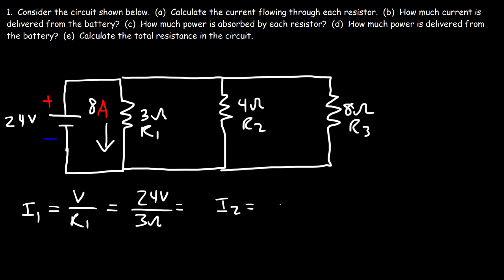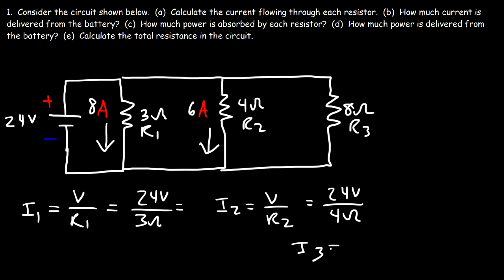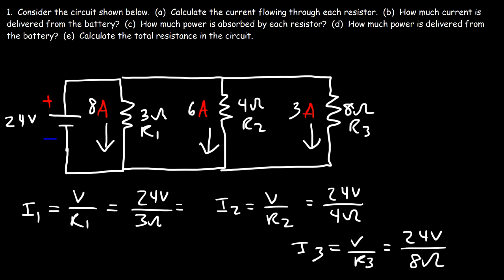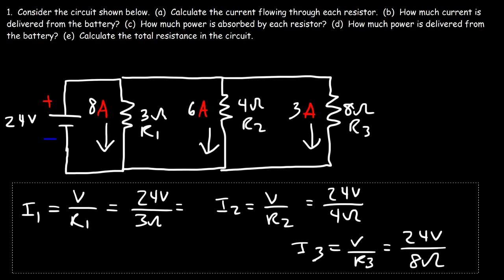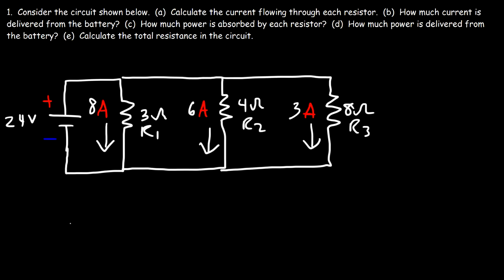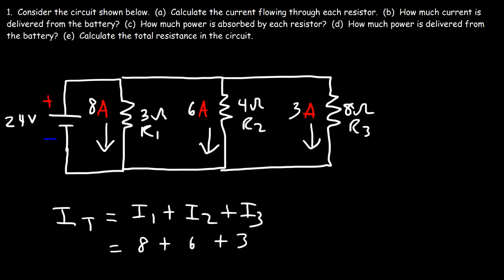To calculate I2, it's the voltage divided by R2 — the 24-volt battery divided by the 4-ohm resistor — so 6 amps flows through that segment. For I3, it's V divided by R3: 24 volts divided by 8 ohms, so I3 equals 3 amps. The total current in the circuit is I1 plus I2 plus I3 based on Kirchhoff's current law. Adding 8 plus 6 plus 3: 8 plus 6 is 14, plus 3 is 17. So 17 amps of current leaves the battery.